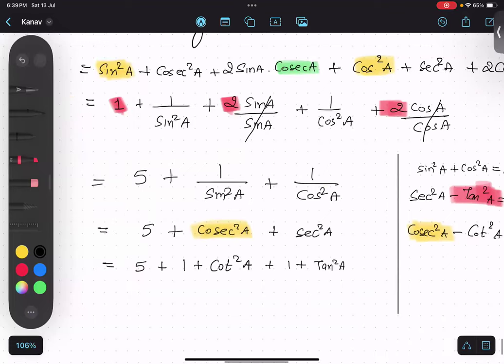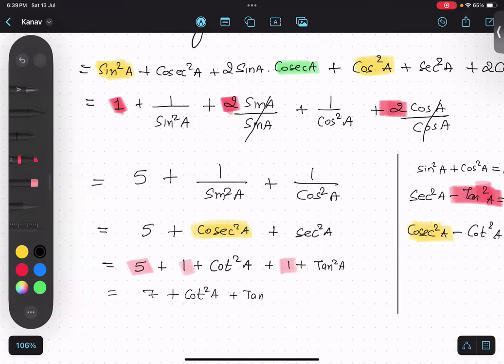So if I just add this: 5 plus 1 plus 1, I get 7 plus cot²A plus tan²A. We got the answer.